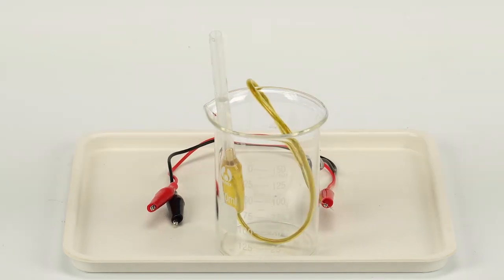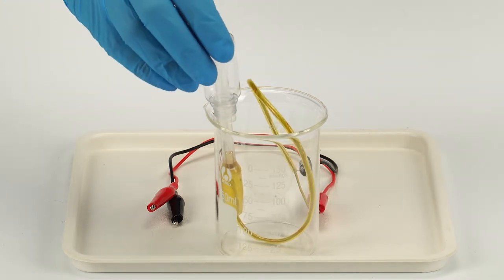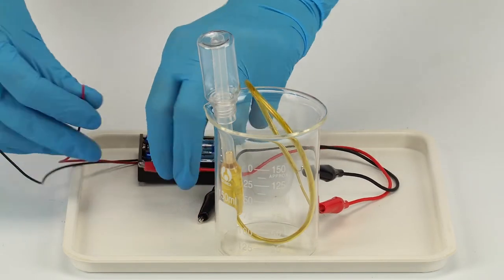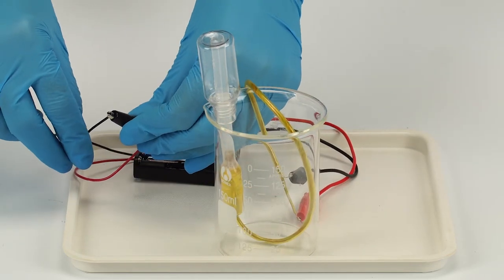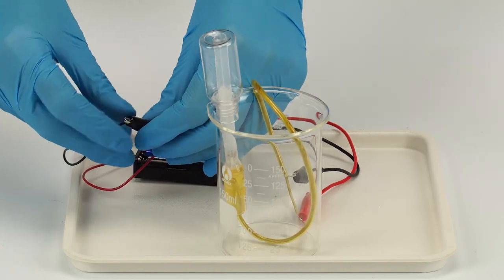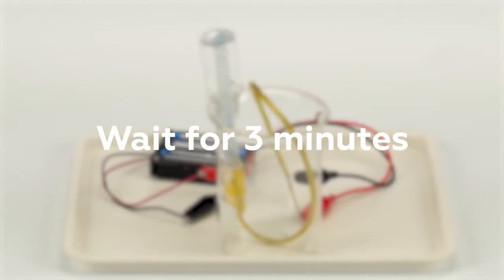Collect some of the oxyhydrogen mixture in the bottle. Put the plastic bottle on the pipette. Connect the battery holder with the batteries to the crocodile clips. Make sure the red crocodile clip is connected to the red wire and the black clip to the black wire. Wait for three minutes.